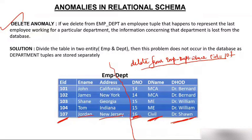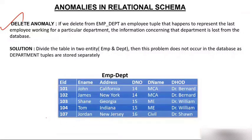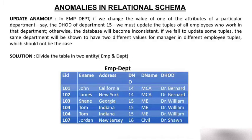Department 16 is lost, Civil is lost, Dr. Sean is lost — even though Dr. Sean has not left the department. Just because of the last employee leaving, the entire department information is lost. The solution is to divide the table. If the tables are separate, deleting employee 107 only removes employee data; the department information remains intact. Definition: deleting the last employee of a department causes the department's information to be lost from the database.